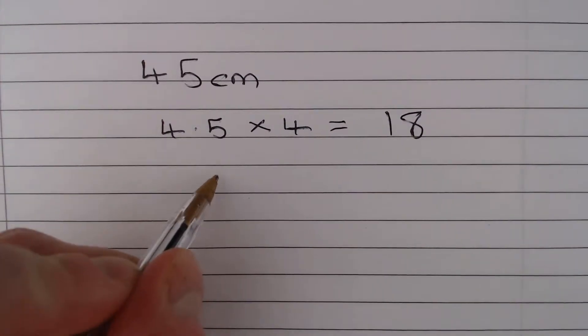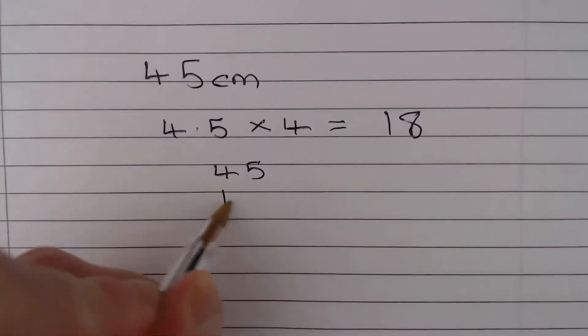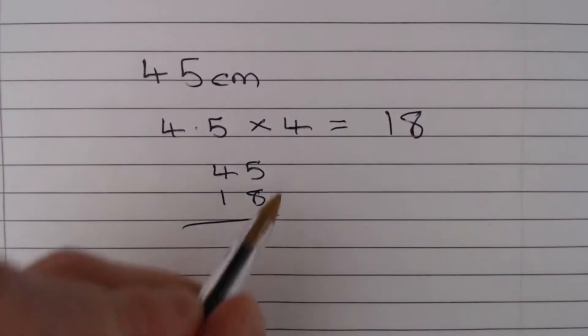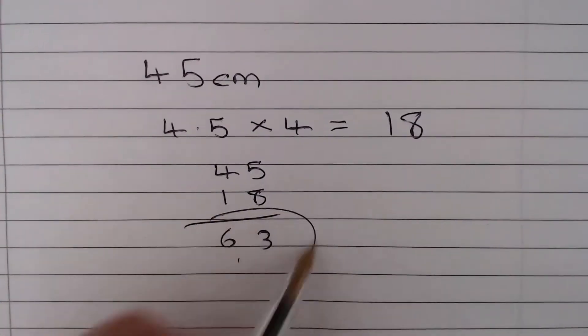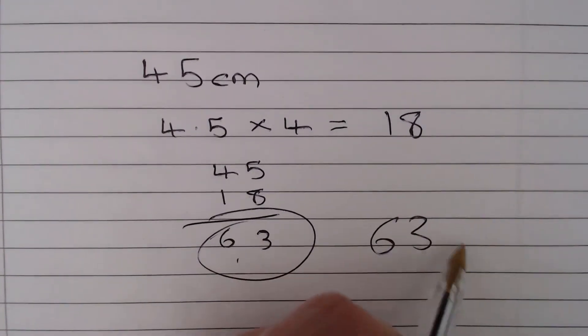So a 40% increase is going to give us 45 plus 18. And when we add these together we get 63. So the answer is 63 centimeters.